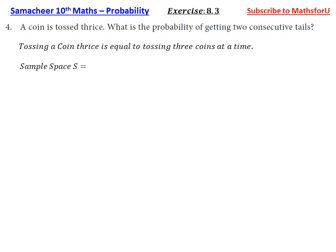So sample space S is equal to: first coin we can get head, second coin head, third coin head. Then first coin head, second tail, third head. And then head, tail, tail. Then tail, head, head. Then tail, head, tail. Then tail, tail, head. And tail, tail, tail. This is the sample space.